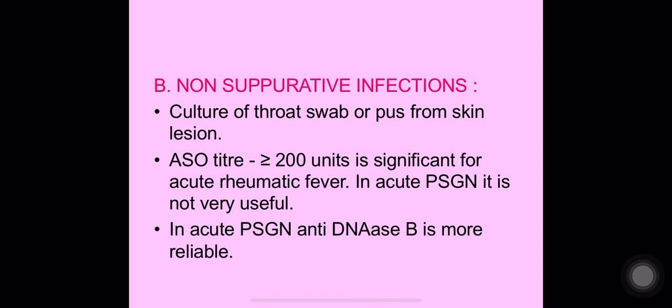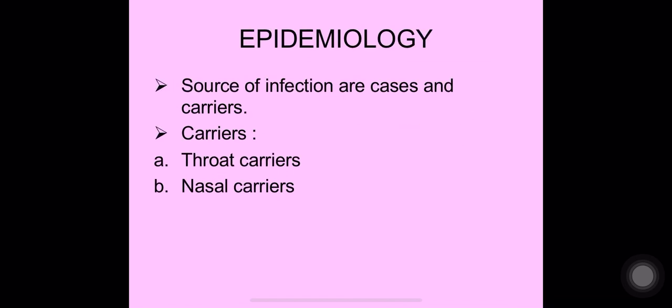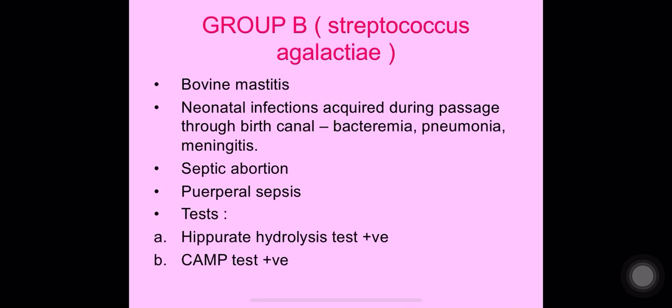For acute post-streptococcal glomerulonephritis, anti-DNase B is a more reliable indicator. Regarding epidemiology, the source of infection includes cases and carriers — throat carriers or nasal carriers. Group B streptococcus causes bovine mastitis and neonatal infections acquired during passage through the birth canal, including bacteremia, pneumonia, meningitis, septic abortions, and puerperal sepsis. Two useful tests for Group B are the hippurate hydrolysis test and the CAMP test.